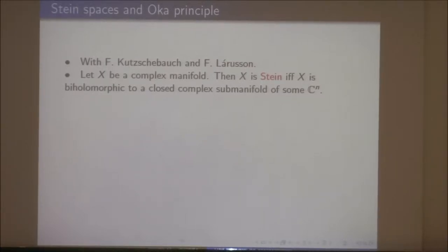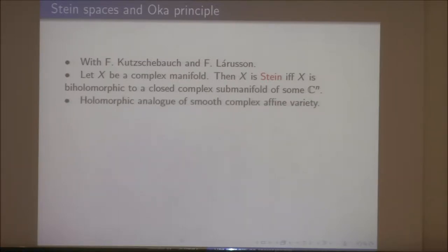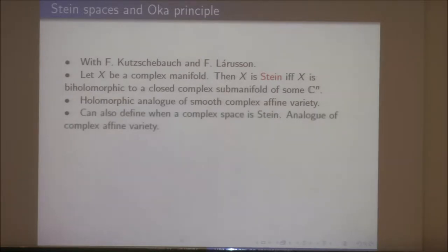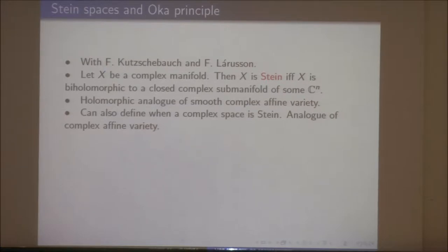Of course, it's not a projective manifold since you've never met a compact manifold. So it's far from being projective. It's the holomorphic analog of a smooth complex affine variety — smooth complex affine varieties are examples of Stein manifolds. You can also define what it means for a complex space to be Stein; it's the analog of a complex affine variety when you allow singularities.